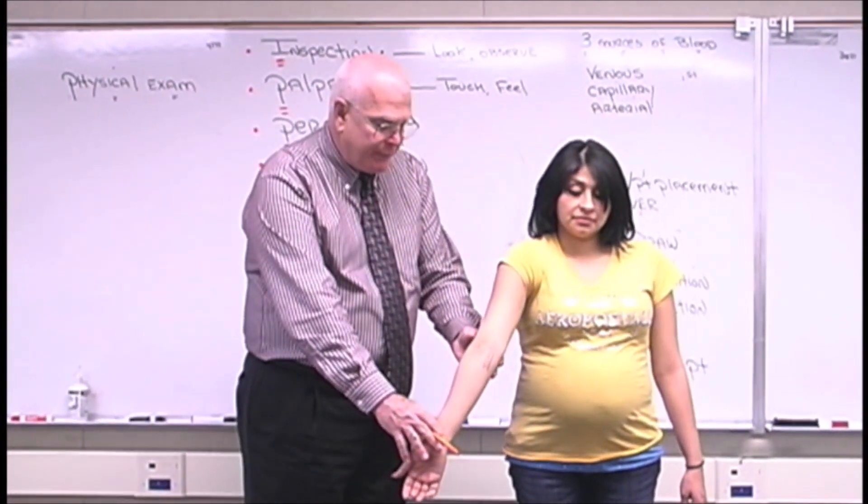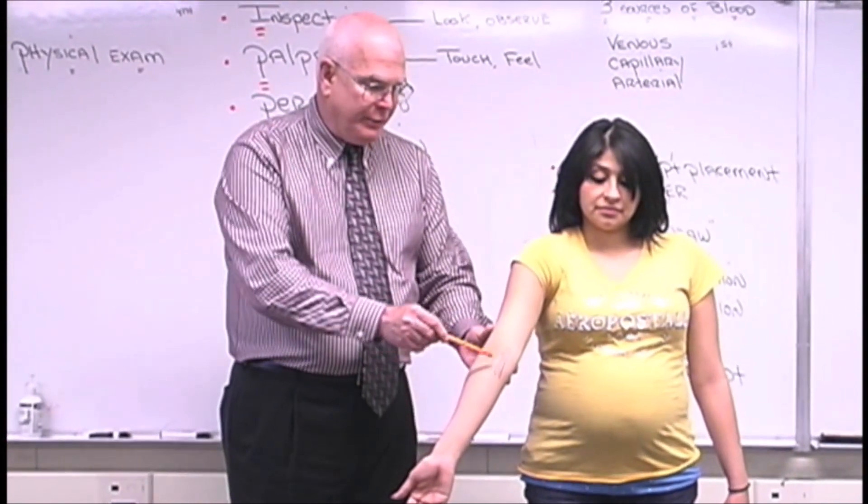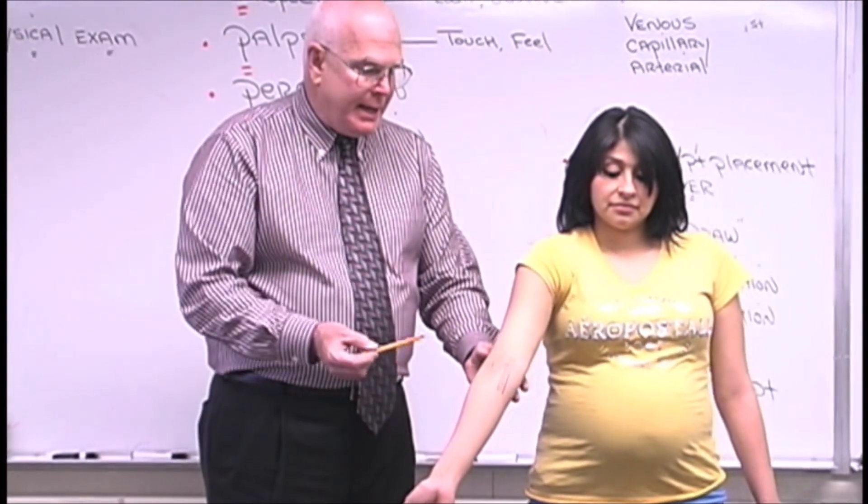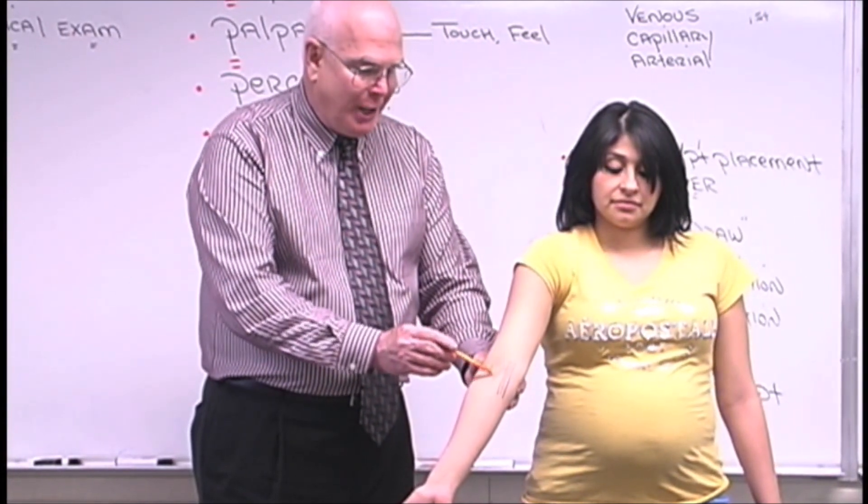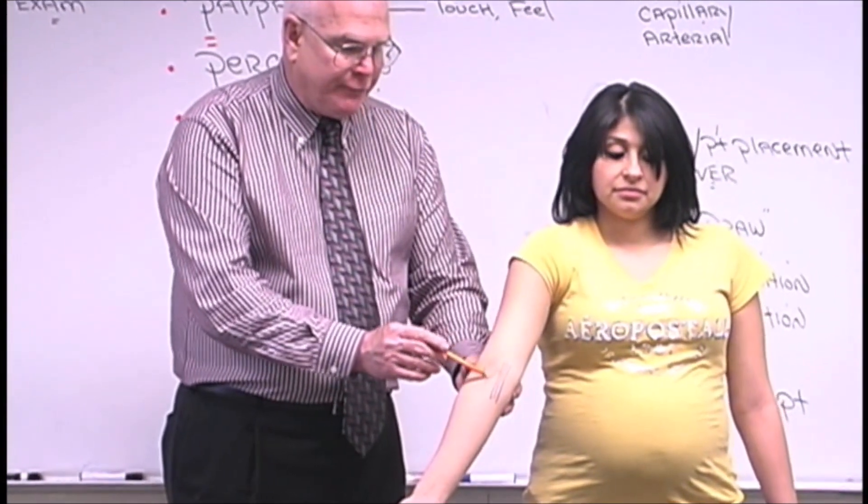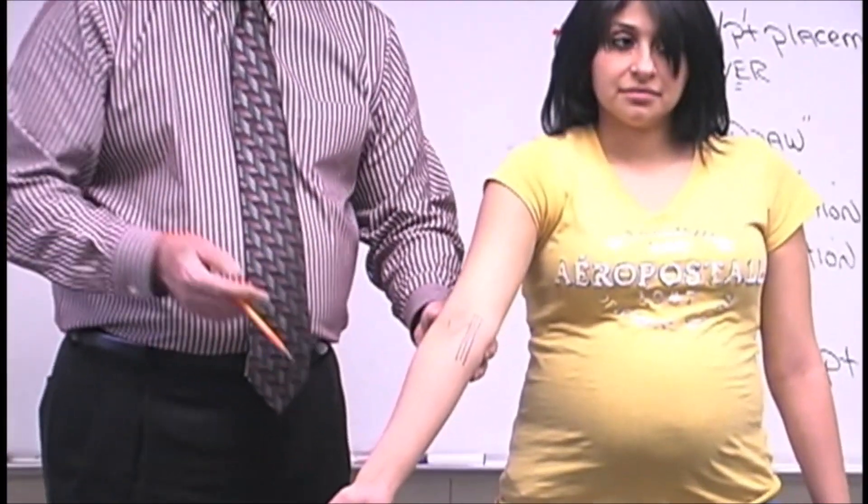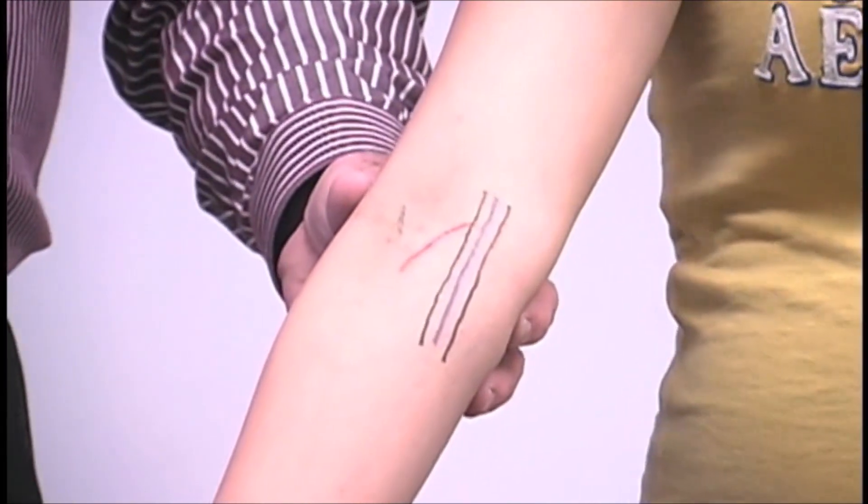The first selection of veins according to CLSI within this area of the forearm, the antecubital fossa, is the median cubital. The median cubital I've drawn here in red. This would be the first vein that I would select if one is available, if you actually see one on inspection of the arm.